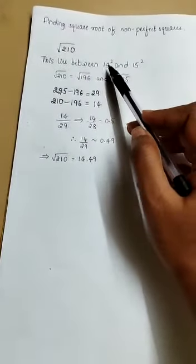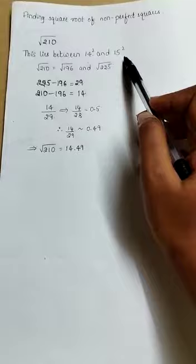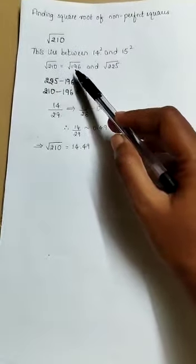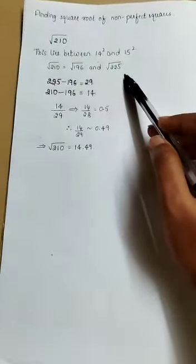The number 210 lies between 14 square and 15 square. Therefore, root of 210 lies between root of 196 and root of 225.